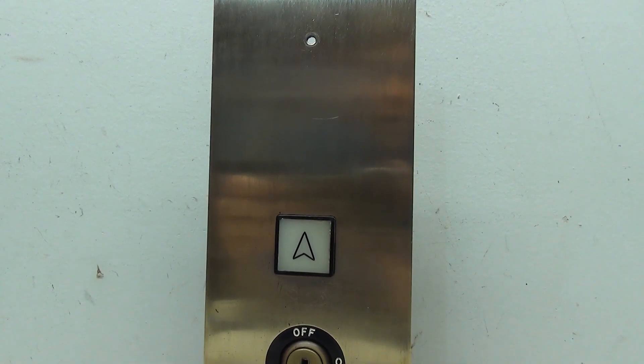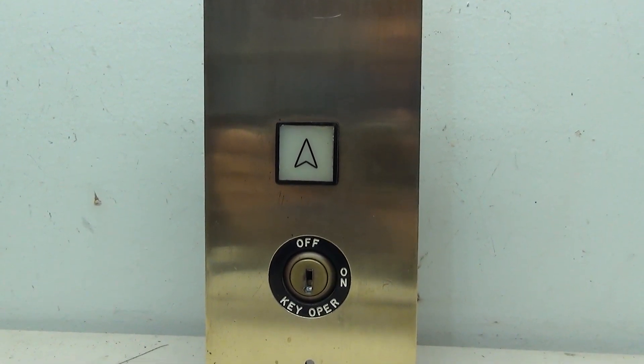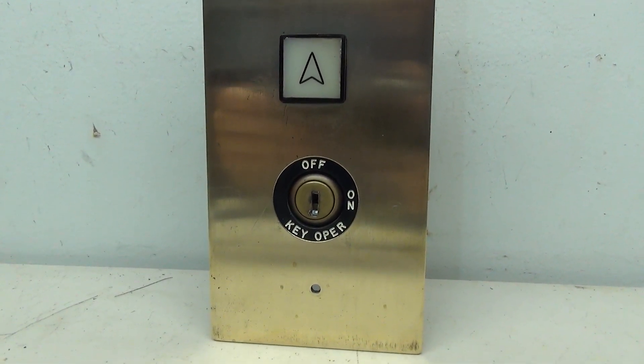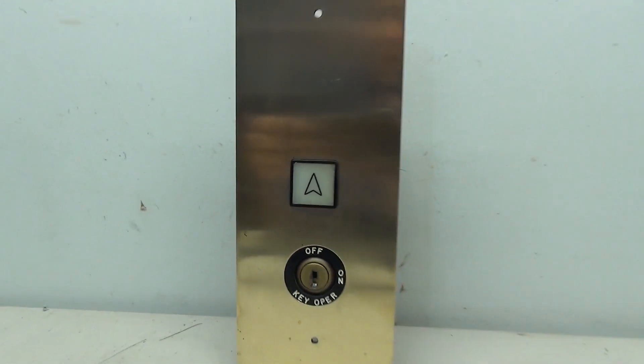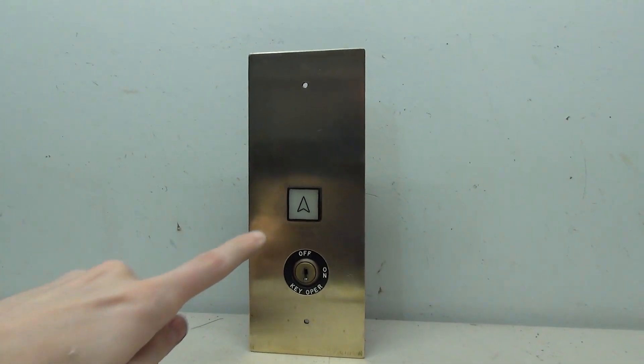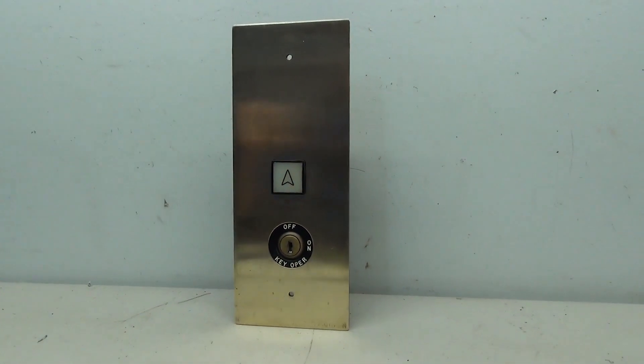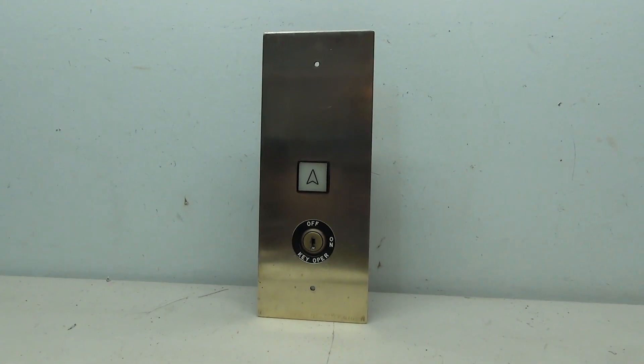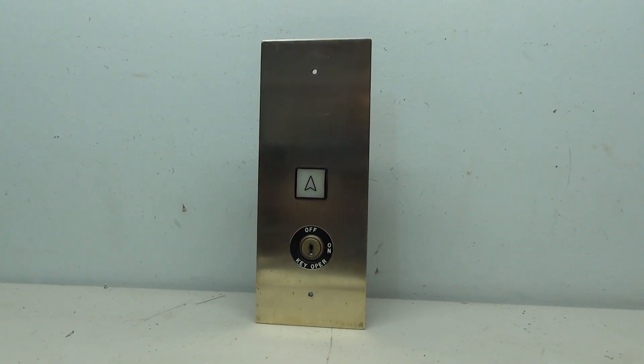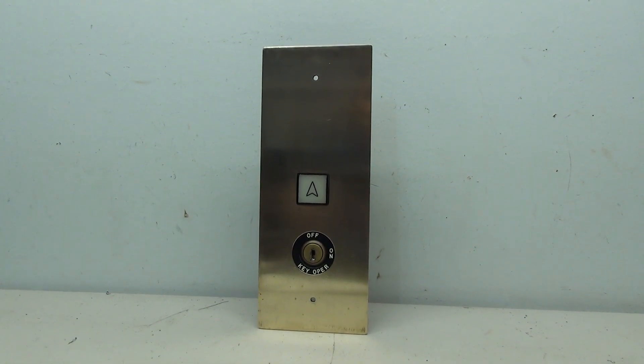So that was the restoration and wiring of this old Montgomery elevator button. I'm extremely happy with the way that this panel came out. It looks a lot better. I mean, look at that shine. And of course, pressing the button makes it light up, which is pretty cool. So thank you for watching this video. I hope you enjoyed it, and I'll see you on the next project.